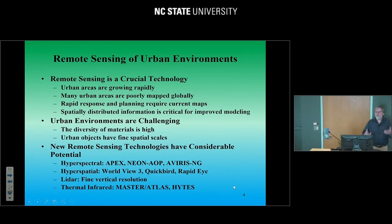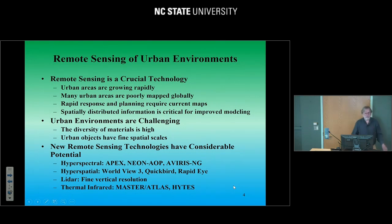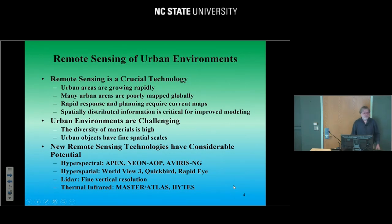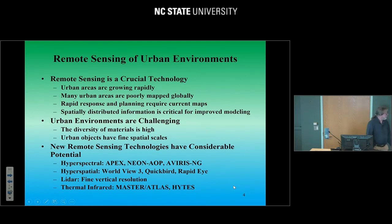To make matters worse, urban environment objects are small, so the footprint size of many sensors we use is just too coarse. But there are also some really interesting remote sensing technologies out there. For example, there's hyperspectral data with many wavelengths, and exciting new sensors such as APEX if you're near Europe, NEON-AOP for ecologists in the U.S., and Avaris Next Generation, which is really an amazing sensor. On the hyperspatial side, there are space-borne datasets providing needed spatial resolution, like WorldView-3, QuickBird, and RapidEye.